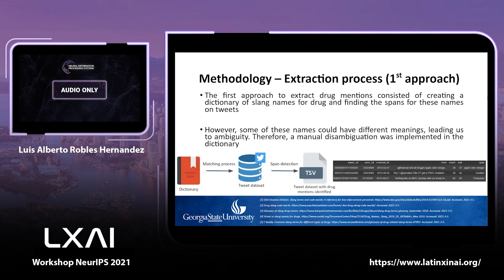The first approach for the extraction process was a dictionary-based approach, in which slang terms for drug names were extracted from different sources to build the dictionary. A manual disambiguation process was also implemented, since there were ambiguous terms related to names, numbers, words in other languages, etc. Using this dictionary, a matching process was performed on tweets from the positive class, and the output was a tab-separated value file containing tweets along with the drug span and their position, as seen in the figure on the right.